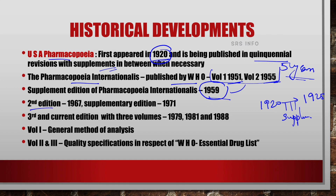The second edition was published in 1967. So the first edition was in 1951 and 1955 across two volumes, the supplementary edition was in 1959, and the second edition was in 1967. The third and current edition has three volumes: the first volume was in 1979, the second in 1981 and the third in 1988.